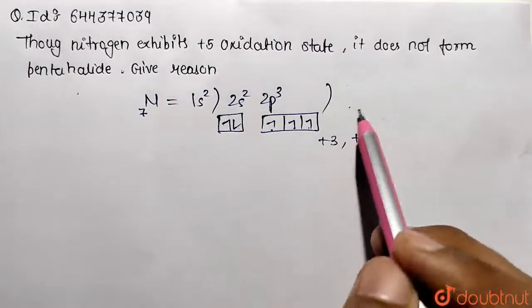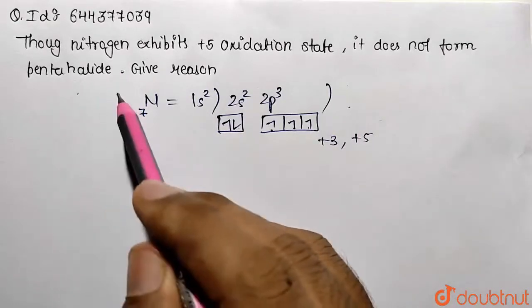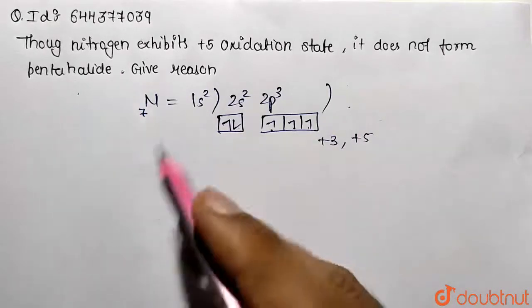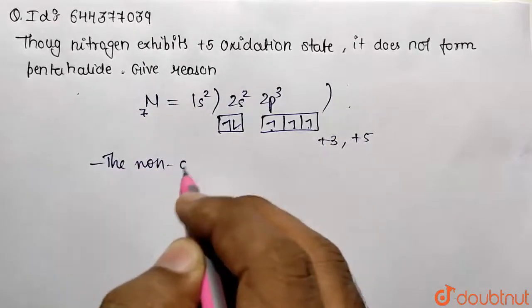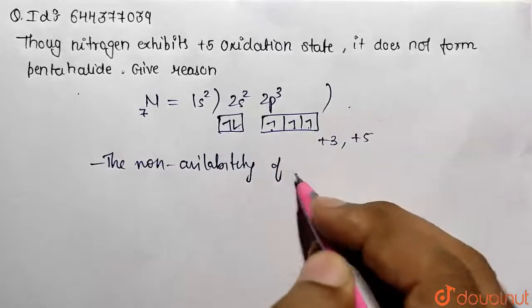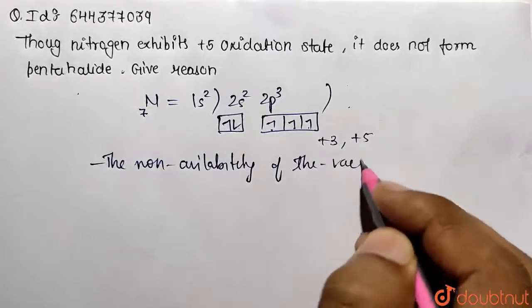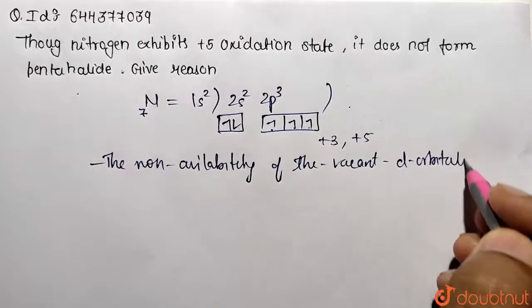no availability of such d-orbitals in the case of nitrogen. So the reason they are not forming any pentahalide is the non-availability of vacant d-orbitals in nitrogen.